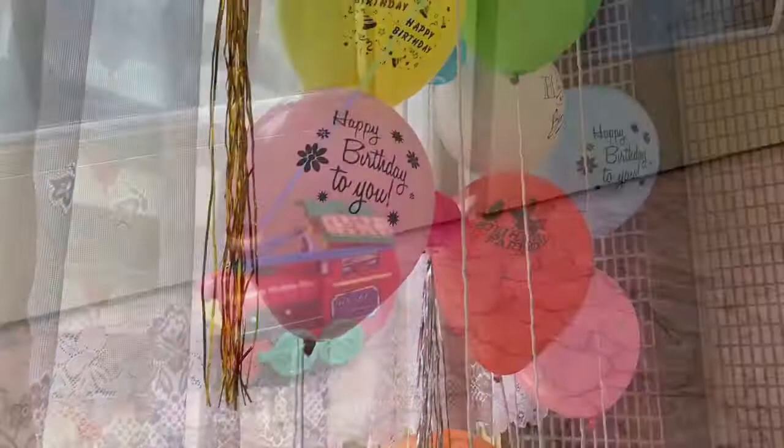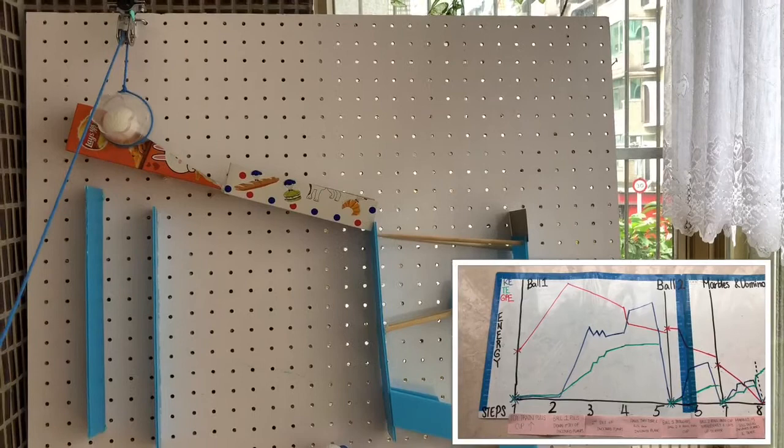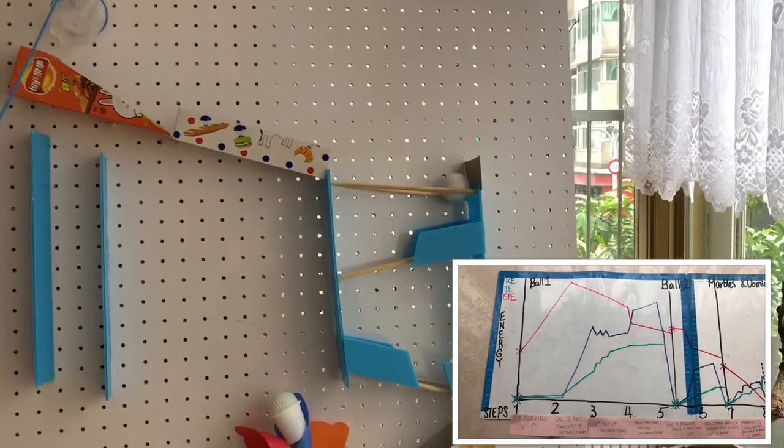As the train pulls the pudding cup up, its kinetic energy increases. The gravitational potential energy of the ball carried inside the cup increases as it's being lifted up, but its kinetic energy stays at zero since it's not moving. It reaches the incline planes and rolls down the first set. Its KE increases. When it reaches the second set, its KE fluctuates as it slows down while rolling.